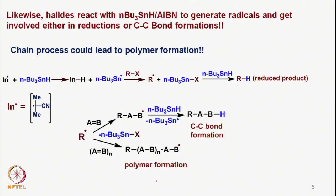Halides also react with tributyltin hydride and AIBN to generate radicals, which can be involved either in reductions or C–C bond formations. This chain process could also lead to polymer formation.